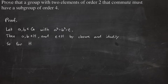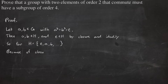So far, our subgroup h is comprised of e, a, and b. Since h needs to be closed, any other element could look like ab, or a squared b, or something like a cubed times b squared times a to the fourth.